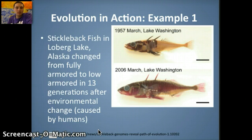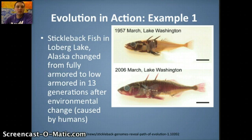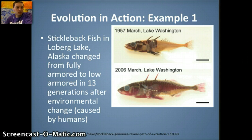We're going to finish up by looking at a couple of examples of evolution we've actually been able to see in the real world. The first example is the change in stickleback fish, which can be found in Alaska, Washington, and parts of Oregon. Early on in Alaska in Lowberg Lake, stickleback were removed because they were considered a pest in the lake environment. The Fish and Game Department poisoned the lake to remove the stickleback. Stickleback can be found in both marine and freshwater lake environments, and when the lake was poisoned, it wiped out all the stickleback.